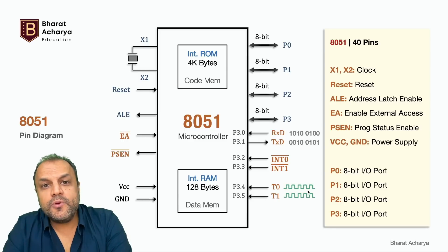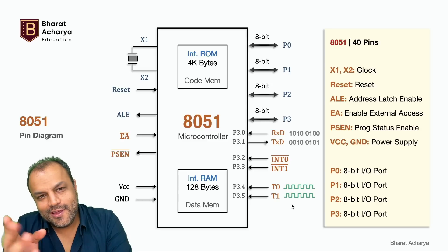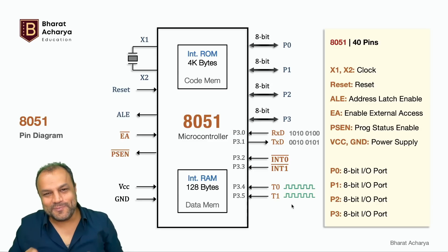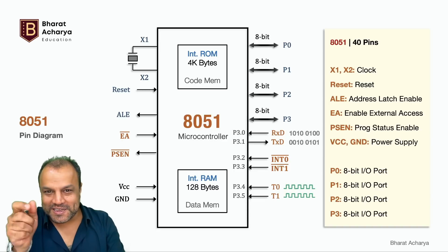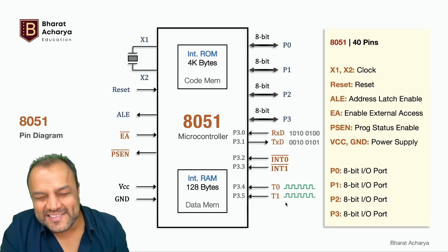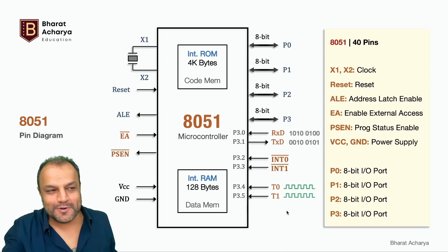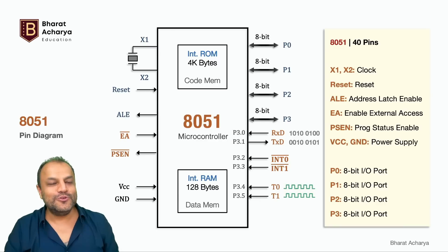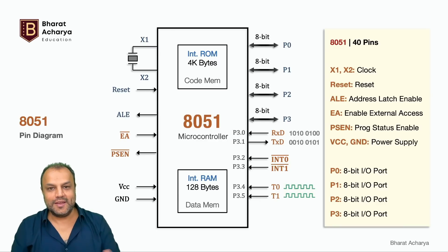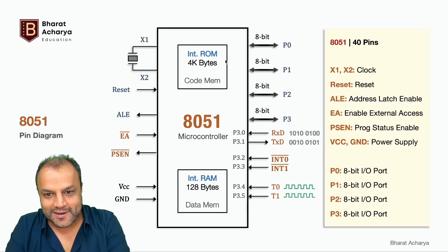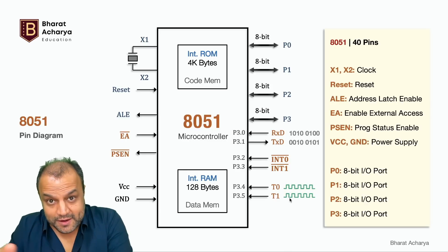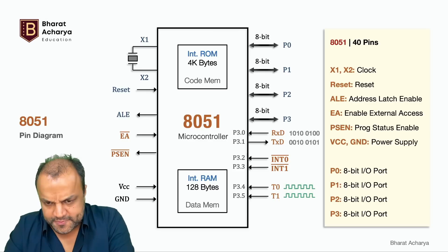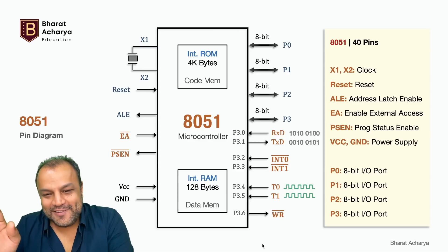T0 and T1 are timer inputs — they provide clock to the timers. As an example, when you put money in a currency-counting machine at the bank those notes being counted are like pulses. Similarly people entering a mall, or products going into the packaging department of a company — those are timer clock pulses. I like to teach everything with real-world examples because everything in 8051 has some use in our day-to-day life.